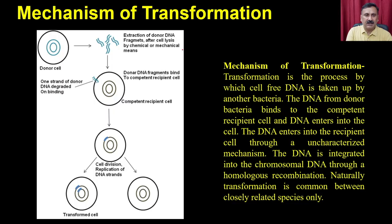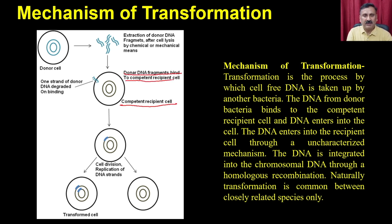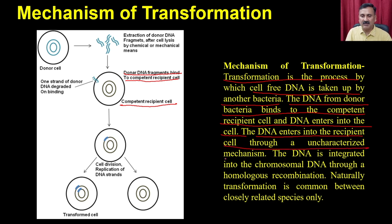The mechanism works as follows: from the donor cell, the DNA fragment carrying antibiotic resistance or any phenotypic gene is released into the extracellular media. This DNA then interacts with competent recipient cells, binds to them, and is taken up. The mechanism of transformation is the process by which cell-free DNA is taken up by another bacterium. The DNA enters the recipient cell through an uncharacterized mechanism and is integrated into chromosomal DNA through homologous recombination.